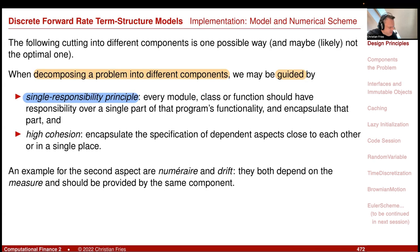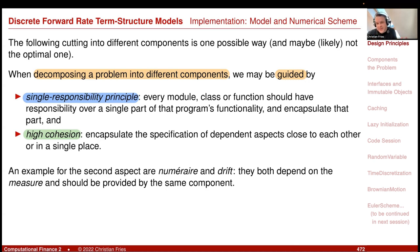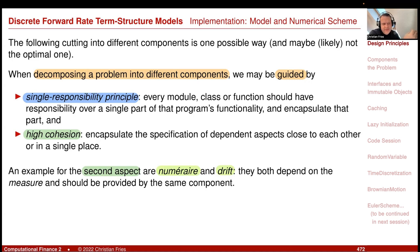Using interfaces allows you to exchange the implementation of each part — this is encapsulation of single responsibility. But on the other side, there is another aspect pulling in the opposite direction: we would like to have high cohesion. This means that aspects that belong together should be close to each other. A nice example is the numeraire and the drift — they should not be cut into separate things because they belong together.